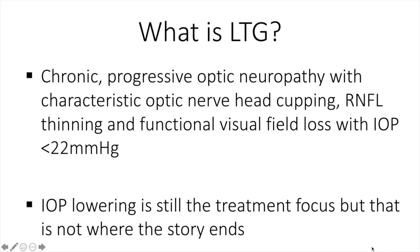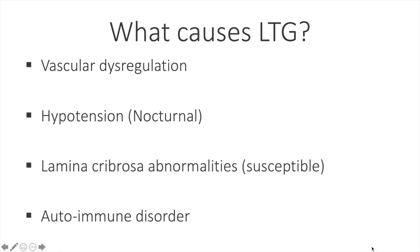Pressure lowering is still the treatment focus despite the lower intraocular pressure, but that's not where the story ends. Some of the causes that have been researched over the years include vascular dysregulation, hypotension — particularly nocturnal hypotension — lamina cribrosa abnormalities, which would make the specific eye more susceptible to damage at lower pressures, and autoimmune disorder.